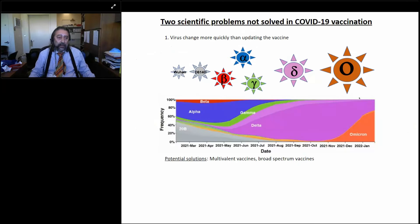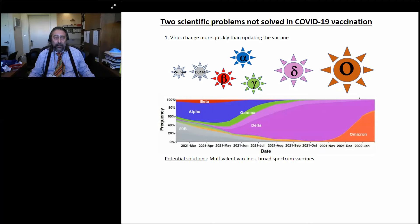The vaccines we have against COVID-19 — the ones that are more used right now, especially in the United States — are the RNA vaccines, either the Pfizer or the Moderna vaccine. These vaccines have really made a great impact in mitigating severe disease, the hospitalizations and deaths caused by SARS-CoV-2. They are highly protective against severe disease. But they are not completely optimal, and there are still a few problems. They are very good for protecting from severe disease, which is the most important thing. But there are two scientific problems that are not solved right now in COVID-19 vaccination.